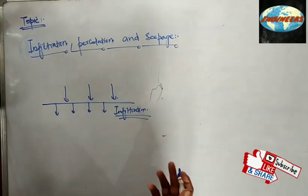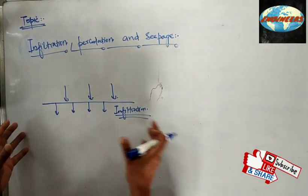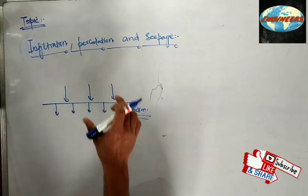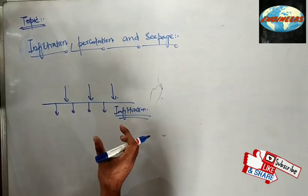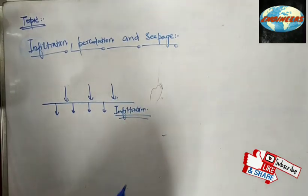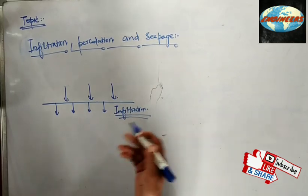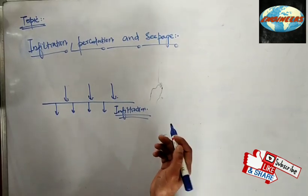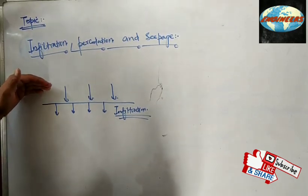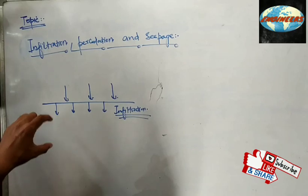Infiltration occurs due to gravity only. The infiltration rate is the rate at which moisture enters the soil. If we have a dry soil, in a rainfall event the infiltration rate will be very high initially — that is called infiltration capacity. So infiltration is the term that denotes when water on the surface of earth enters the soil.